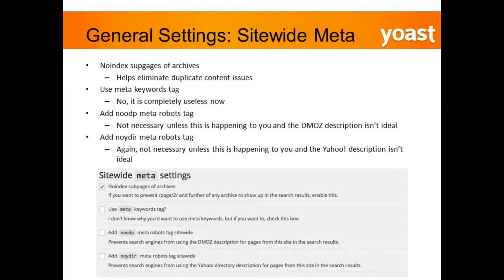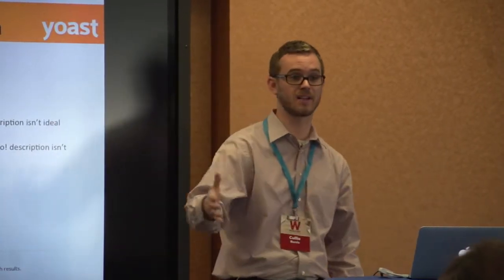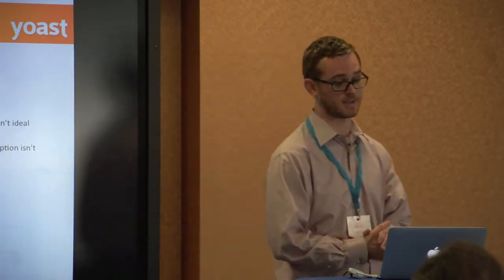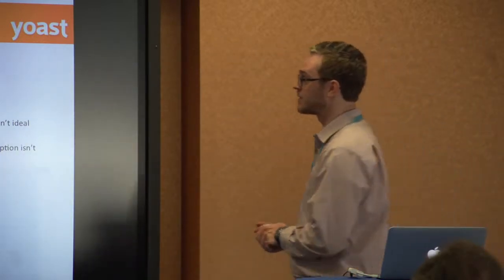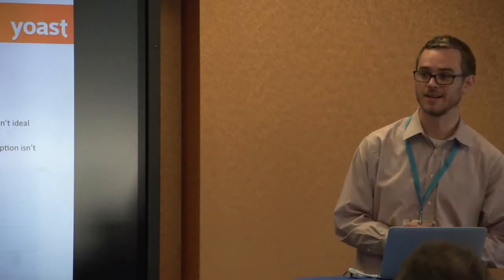For site-wide meta settings, 'no index sub-pages of archives' should be checked. When a blog post gets archived two years down the road, it can potentially cause duplicate content issues, especially with paginated pages. That same article can pop up in a different section of your website and may flag for duplicate content. For 'use meta keywords tag,' absolutely not — it has no influence whatsoever anymore. Back in the day, ten years ago it did, but not the case anymore.